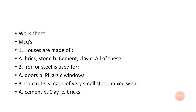Number two: iron or steel is used for — option A: doors; option B: pillars; option C: windows. Iron or steel is used in pillars, so option B is correct.